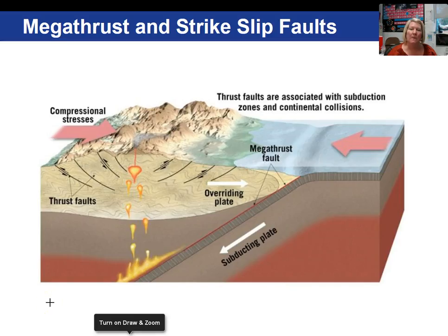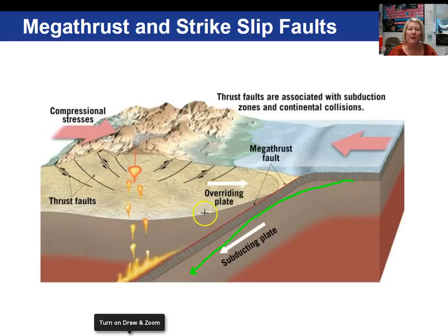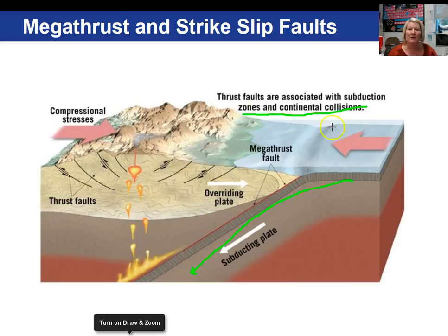The most dangerous, largest earthquakes occur along the megathrust areas on earth and strike-slip faults. Looking at the megathrust diagram, we have a subducting slab of ocean crust subducting beneath a continent. This is your megathrust fault right along here — this overriding plate creates a thrust reverse fault in this megathrust situation, associated with subduction zones and continental collisions. Compression is the type of stress in this situation.